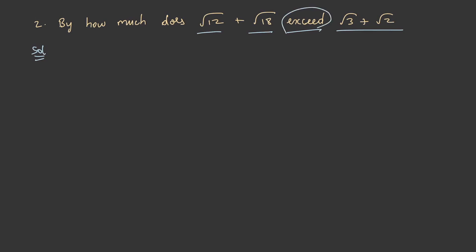In order to get this value, we need to subtract these terms. √12 + √18 - (√3 + √2). We are subtracting because we need to know how much this value is exceeding.